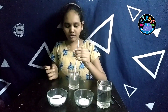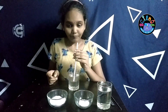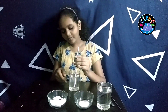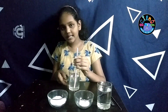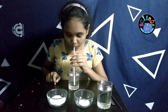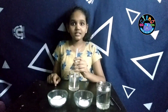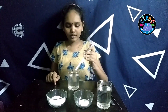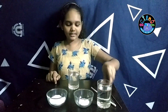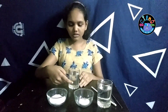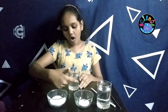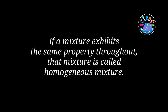I am going to taste the upper portion of this mixture — it is bitter. Now I am going to taste the middle part — it is also bitter. Now I am going to taste the bottom portion — it is too bitter. In this experiment you can understand that the salt is equally distributed in all of this liquid. If a mixture exhibits the same property throughout, that mixture is called a homogeneous mixture.